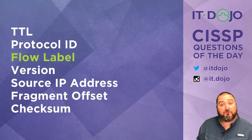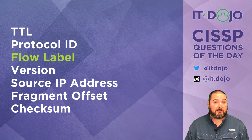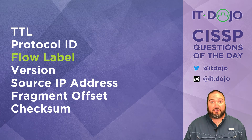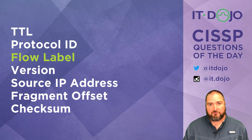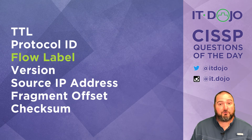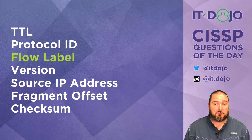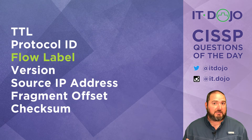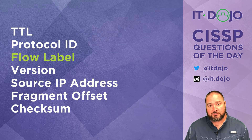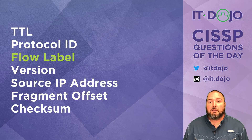The version field exists in both the IPv4 header and the IPv6 header — it identifies the version of IP that you're using. The source IP address also exists in both. It's worth noting that in IPv4, the source IP address is 32 bits in length, whereas in IPv6, it is 128 bits in length.